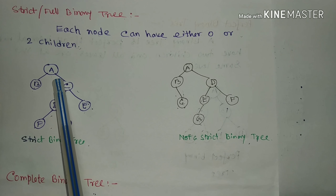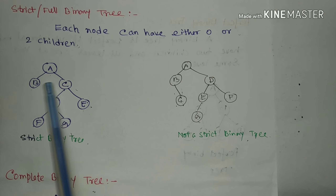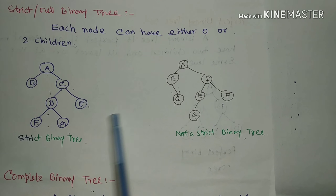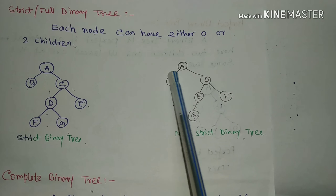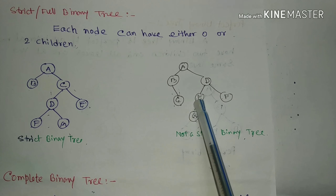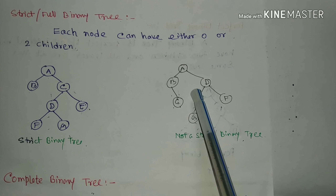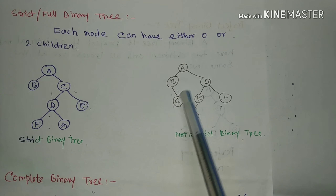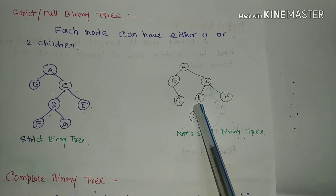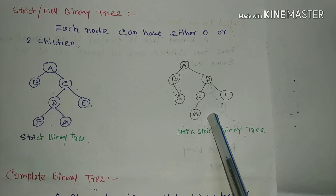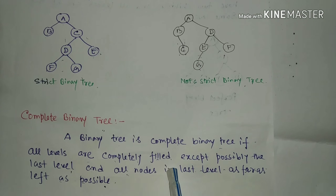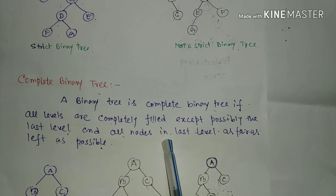In this first tree, each node has either zero children or two children — A has two children, B has zero children — so it is a strict binary tree. But this second tree is not a strict binary tree because node B has one child and node E has one child. Each node must have zero or two children, and these two nodes have not fulfilled the criteria of strict binary.